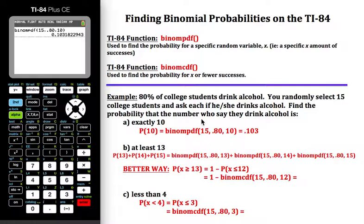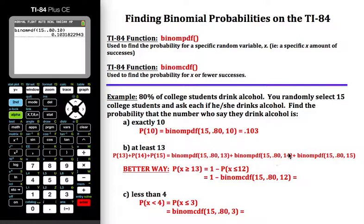Find the probability that the number who say they drink alcohol is at least 13. If I'm asking 15 people and at least 13 of them are going to say yes, I really have three distinct probabilities: either 13 of them will say yes, or 14 of them, or 15 of them. If you wanted to use the binomPDF function, you would have to do it three different times — once with 13, once with 14, once with 15 — and then add them up. That is rather long.